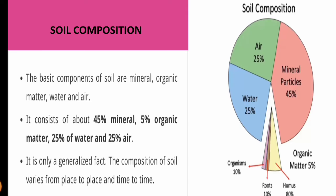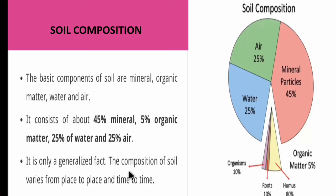Now, soil composition — what components are present in soil. The basic components are: air at 25%, mineral particles at 45%, water at 25%, and organic matter at 5%, including humus, roots, and organisms. This composition may vary from place to place and time to time.